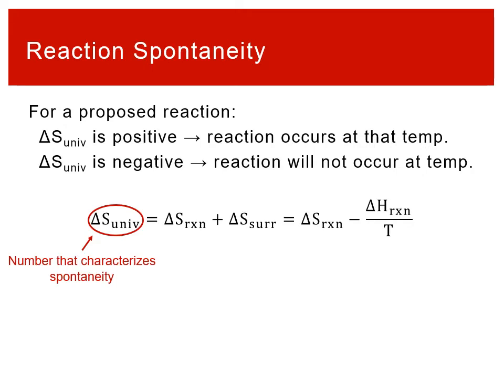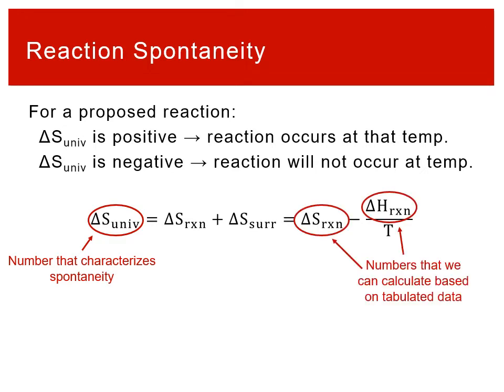The sign of ΔS of the universe characterizes spontaneity. We can break that up into the reaction and surroundings components, because we need something tangible to calculate. We've seen it's based on the change in entropy and enthalpy of the reaction. While we care about ΔS of the universe, we can't just look that up directly — but we can calculate ΔS and ΔH of the reaction from tables of reference information, which is really useful.